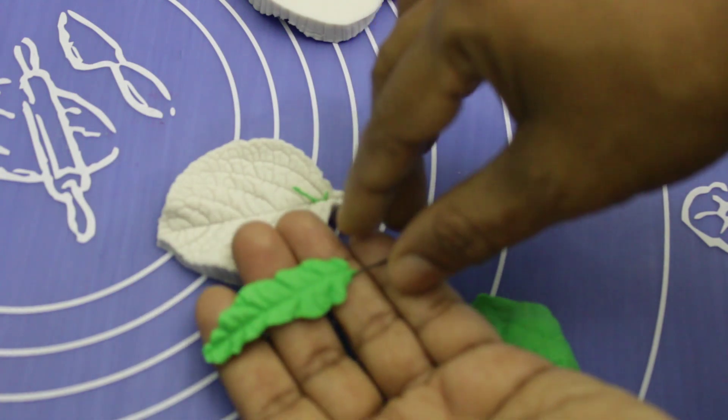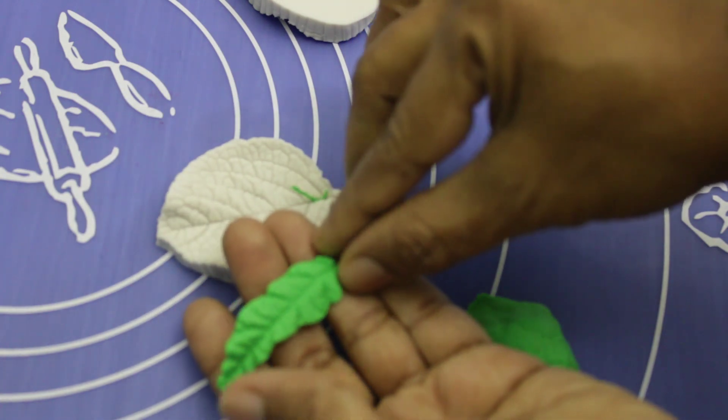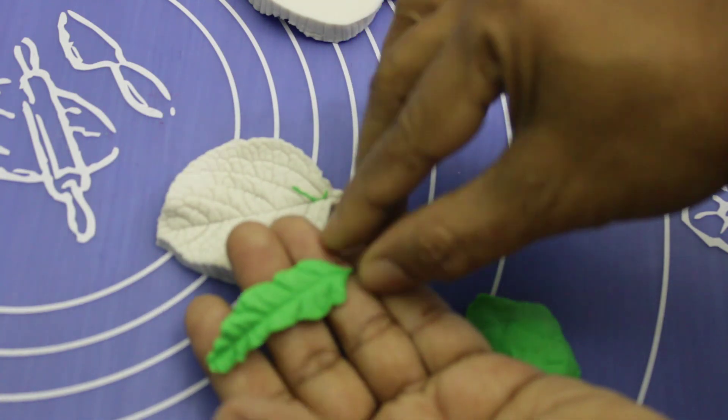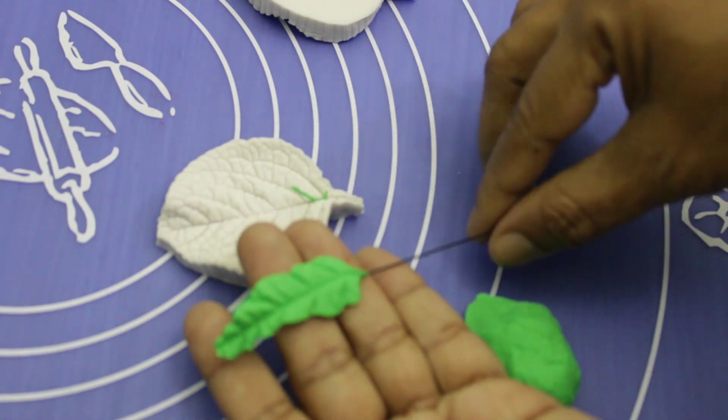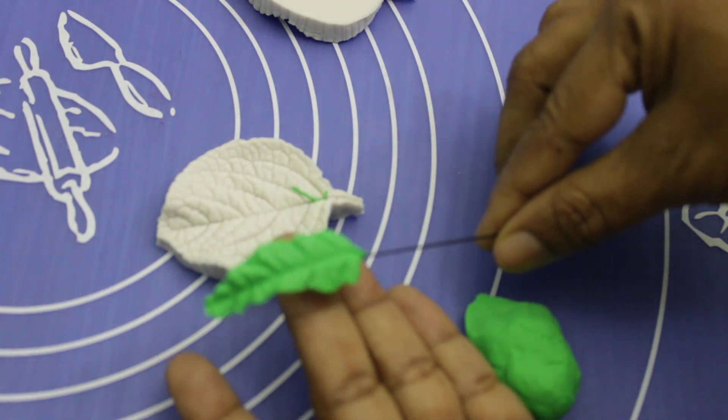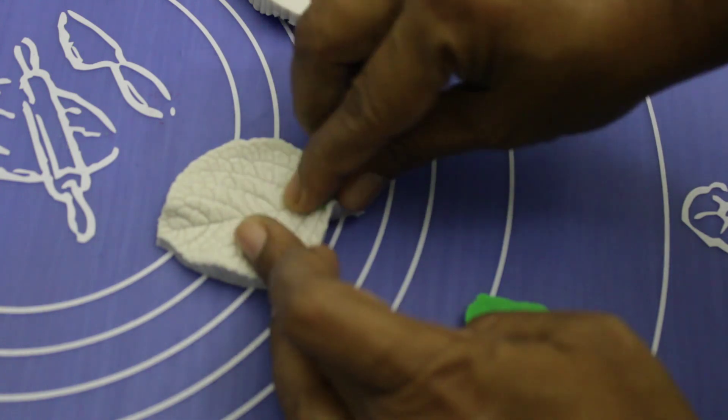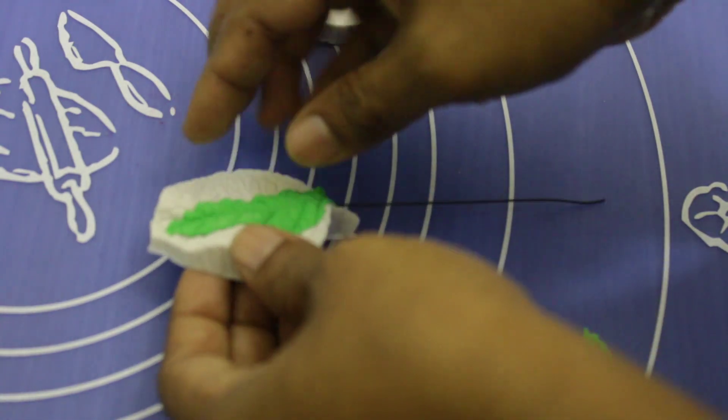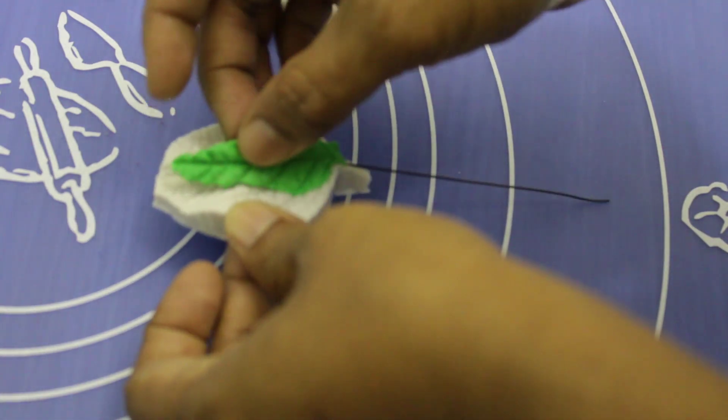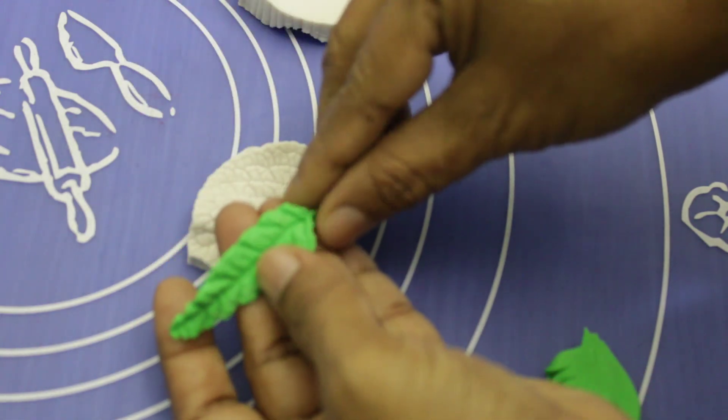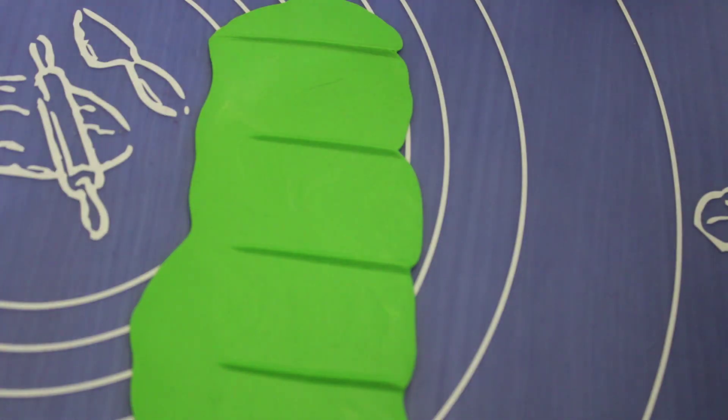So the same way I am making more. I like this leaf, it is very realistic. Now we are going to make rose leaves.